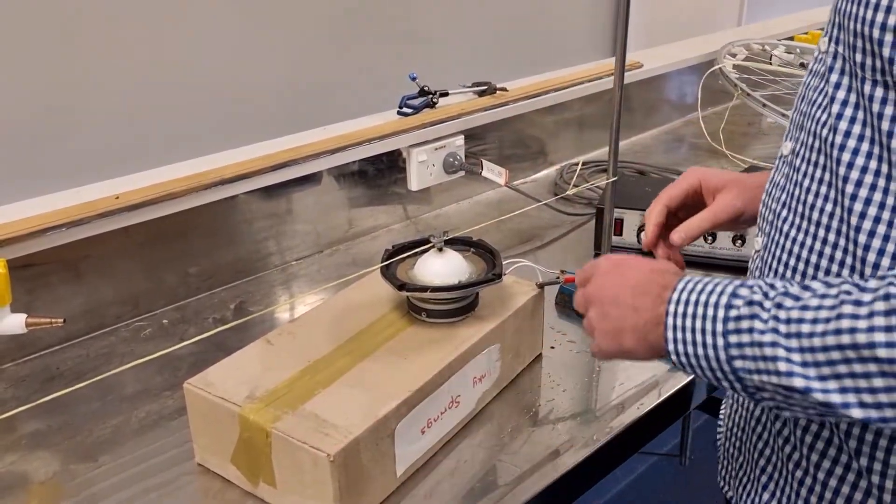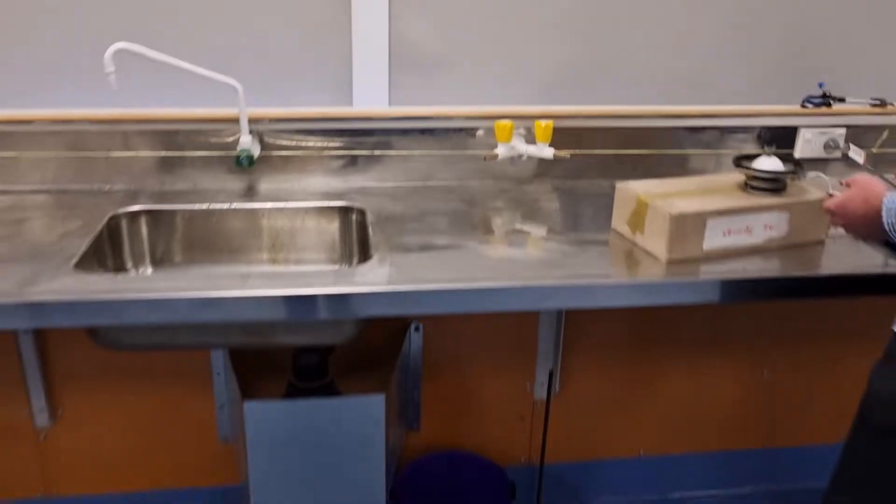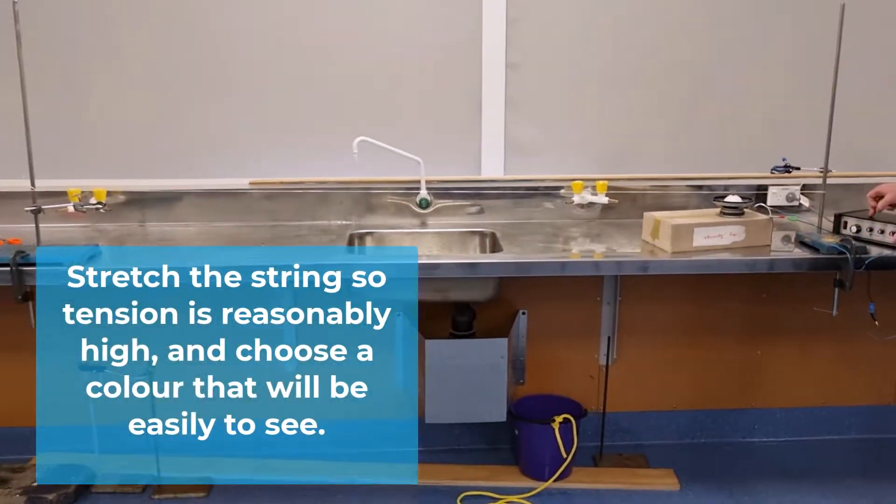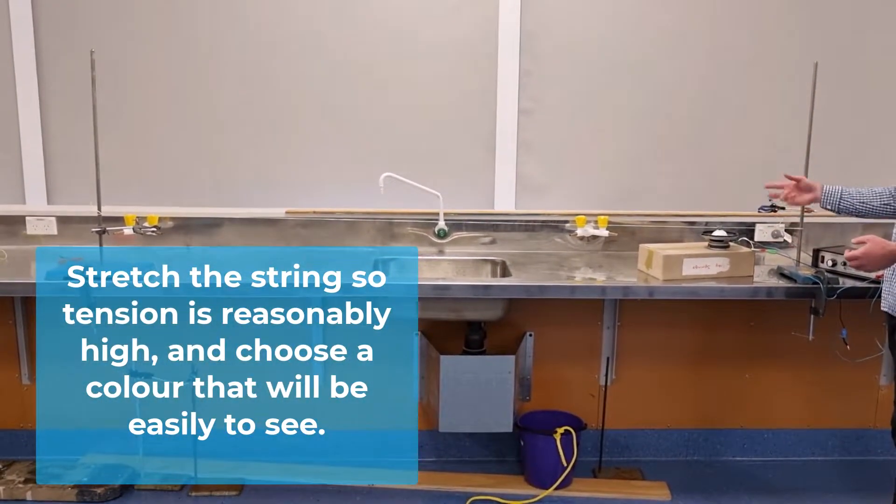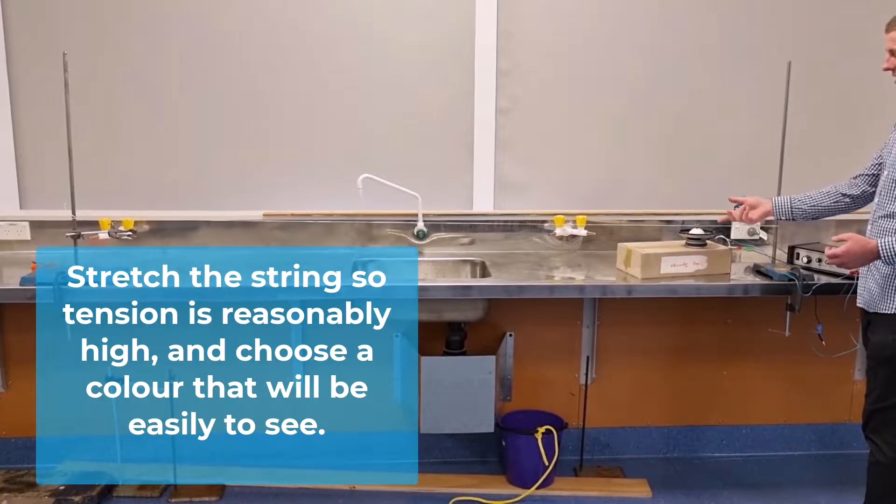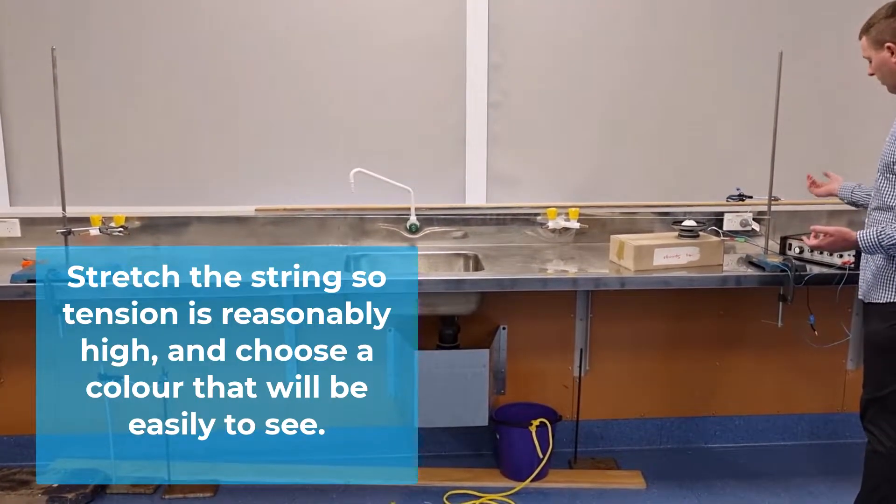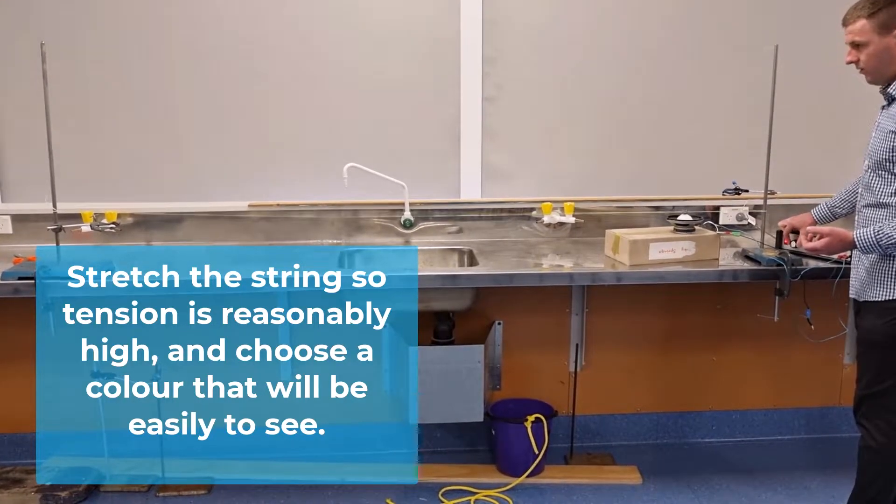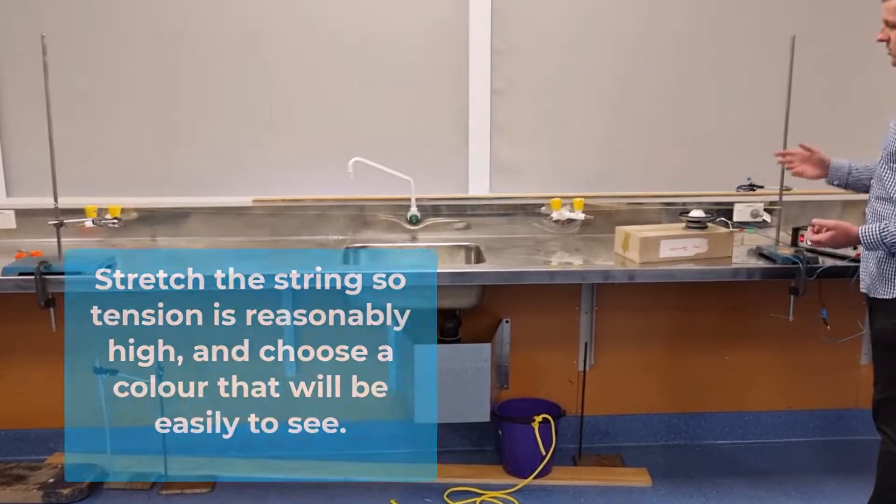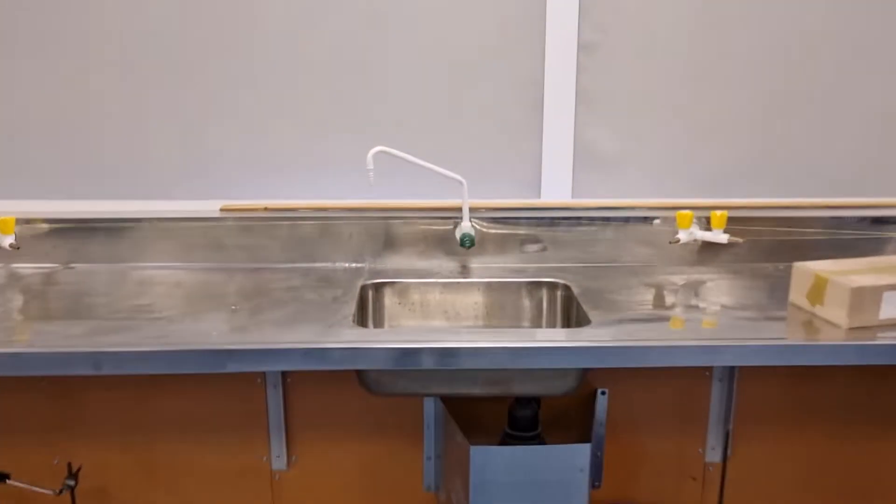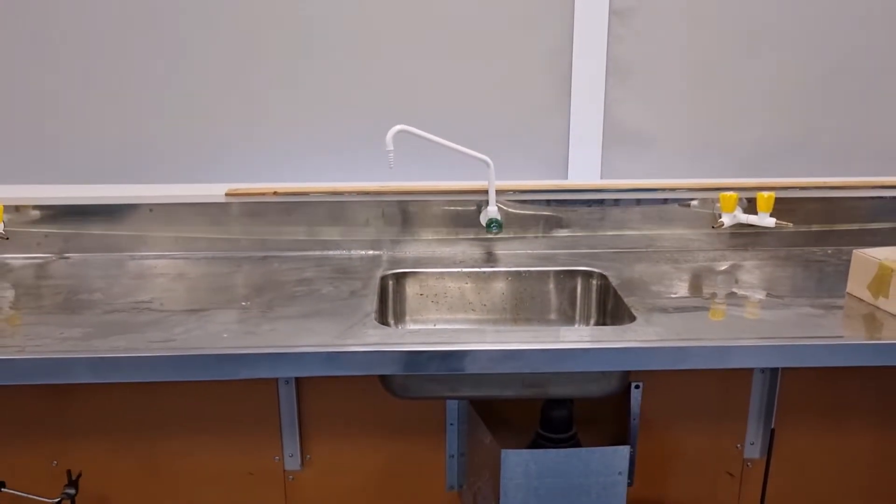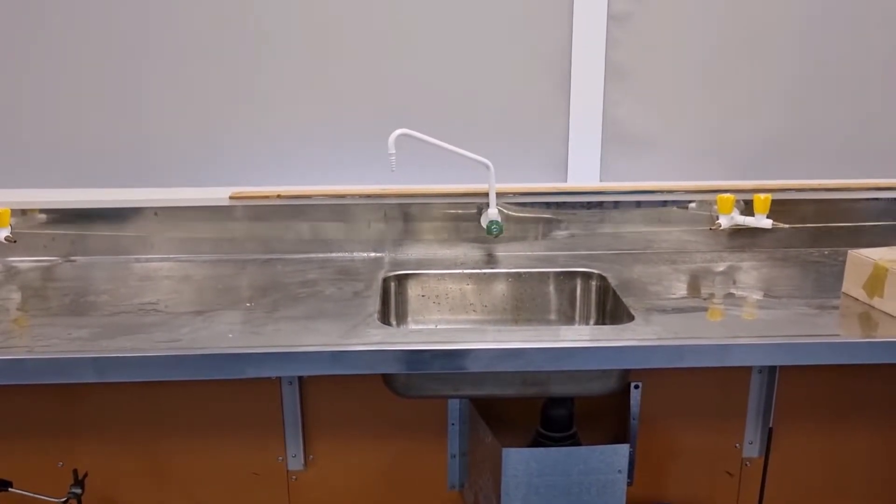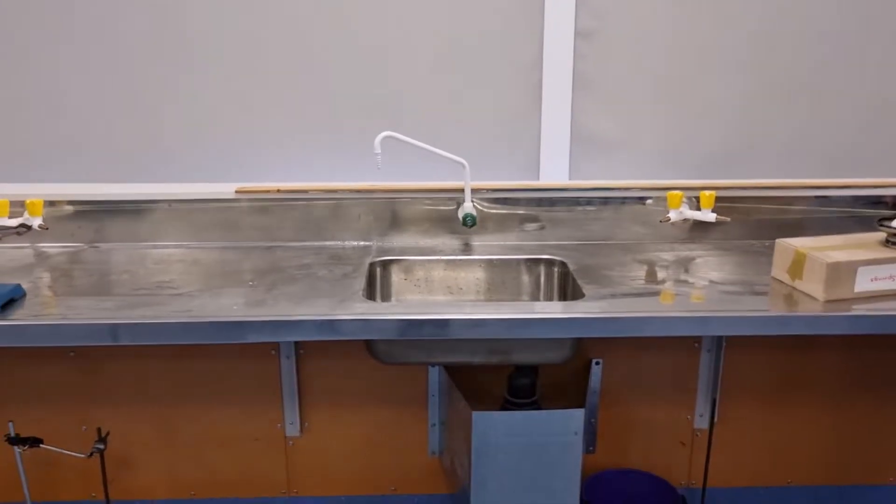We have a string maybe two meters long hooked up to a signal generator, but you can probably just, if you keep the amplifier that this came from, you can just put it up to a computer, either or. And then we'll click it on and we can see that it'll start from the first harmonic. It's a bit fiddly just to get it going, but once it's going it's all right.